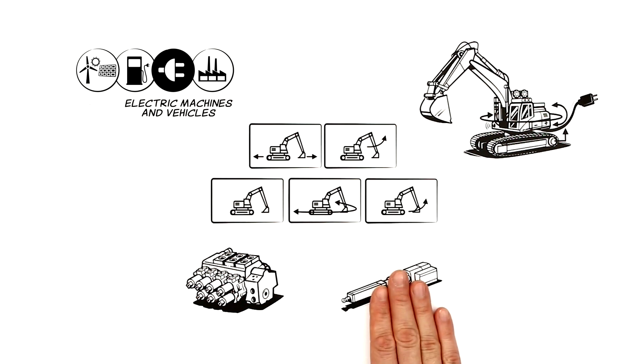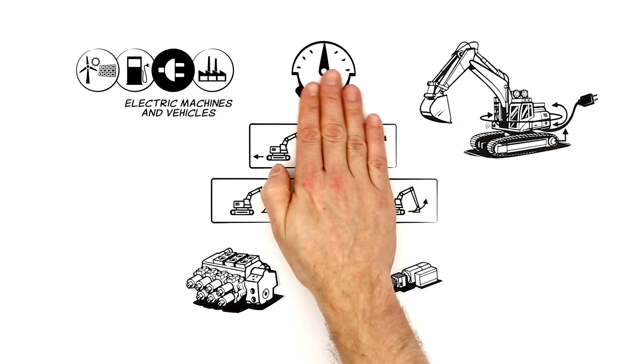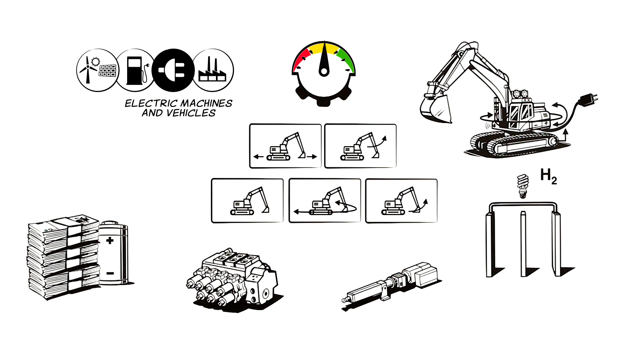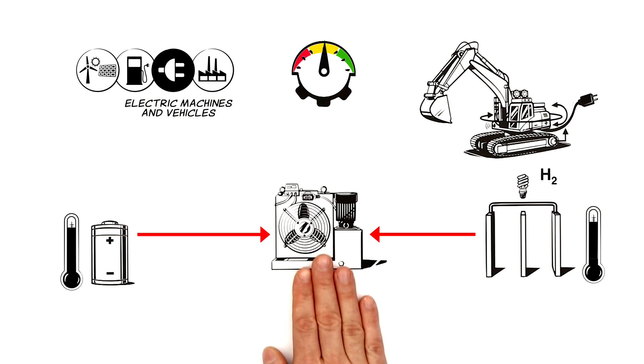In the third area, Hydeck looks at how a machine changes when an electric drivetrain is added. This also applies to the current hydraulic operating functions. Their level of efficiency has a direct impact on the battery or the fuel cell, those parts of the electric vehicle that are the most expensive ones.